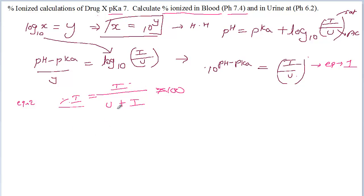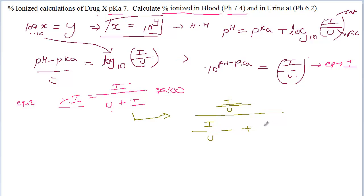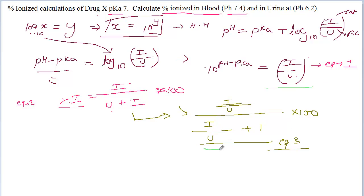This is the ionized concentration and this is the unionized concentration. I'm going to rewrite this equation in a different format: it's (ionized over unionized) divided by (ionized over unionized plus 1), times 100. This is the same equation rewritten — let's call it equation 3. You're going to use equation 1 and equation 3.